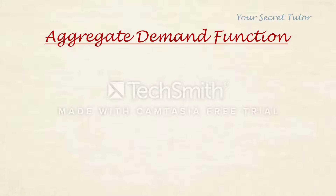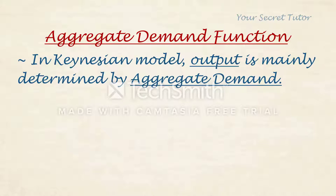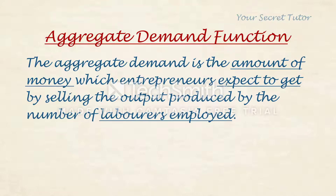Output is determined by aggregate demand. In the Keynesian model, output is mainly determined by aggregate demand. Aggregate demand is the amount of money which entrepreneurs expect to get by selling output produced by the number of laborers employed.